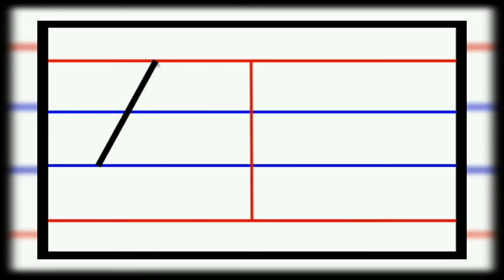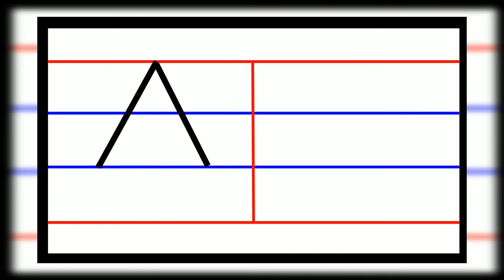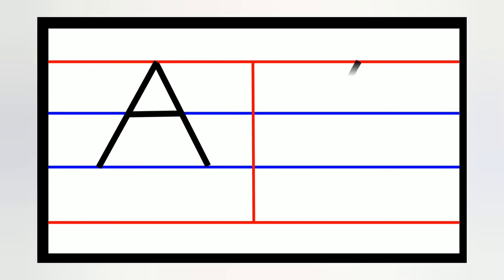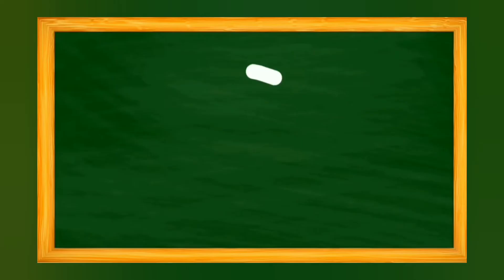Now let's see how to write it on the red and blue line. We are going to start from the top red line with a right-to-left slanting line, coming down to the second blue line. Then again from the top red line, write a left-to-right slanting line down to the second blue line. Then on the first blue line, write a sleeping line. This is our capital A.